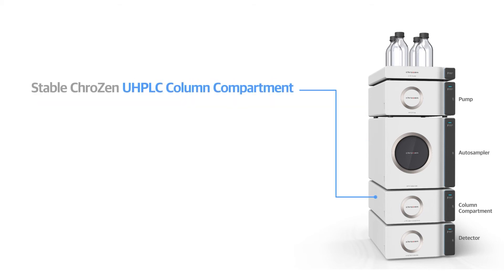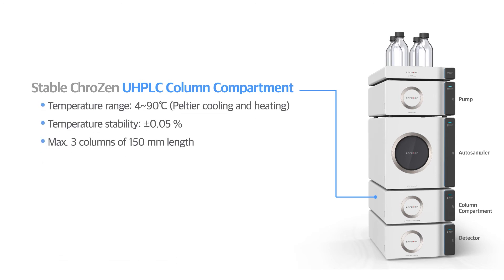Stable Crozen UHPLC column compartment. The Peltier cooling and heating system controls the temperature from 4 to 90 degrees centigrade and temperature stability is plus or minus 0.05 degrees. Maximum three columns of 150 millimeter length is available.